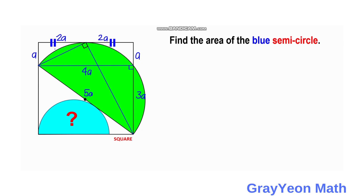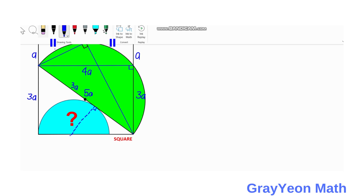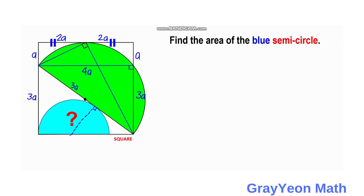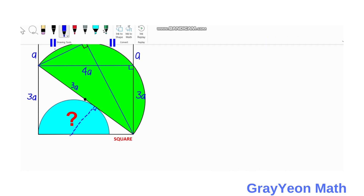Next, we label this side as 3A also. If that is 3A, then if we draw a perpendicular line from this point of tangency to the center of the blue semicircle, this should also be 3A. So the 5A diameter is divided into two parts: 3A and 5A minus 3A, so this portion becomes 2A.